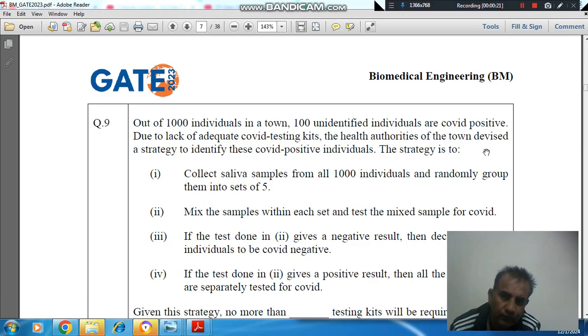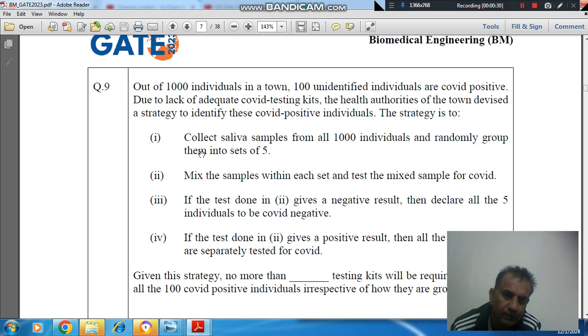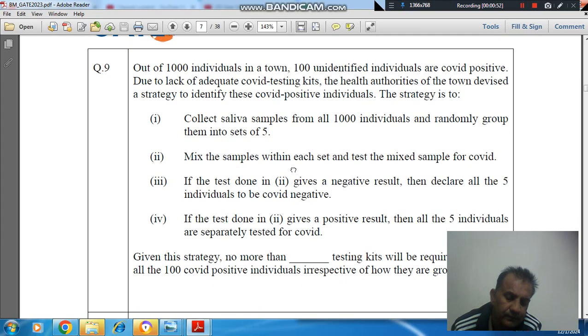The strategy is: 1. Collect saliva samples from all 1000 individuals and randomly group them into sets of 5. 2. Mix the samples within each set and test the mixed sample for COVID.